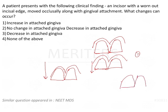With passive eruption, the level of the gingival attachment usually remains where it is and a part of the root surface gets exposed. However, in this situation, the gingiva has maintained its normal position with the tooth — meaning there is no exposure of root surface, and the clinical crown height has been maintained. So what changes could have possibly occurred? Options: increase in attached gingiva, no change, decrease in attached gingiva, or none of the above.